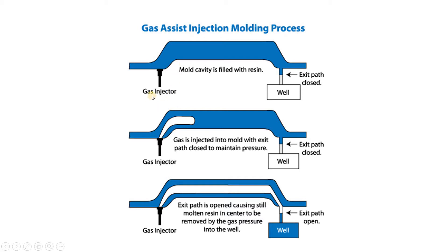You can see here how the mold cavity is filled with resin or melted plastic. There is a gas injection system that is initially closed, and the exit wall is also closed. Once the material has been filled, we open the gas injection system and inject gas into the mold with the exit path still closed, to maintain pressure.